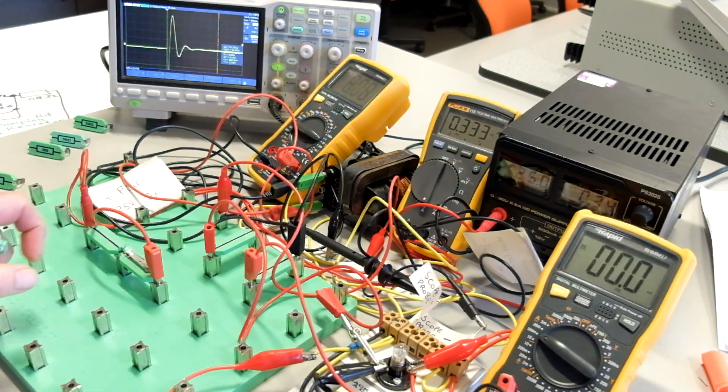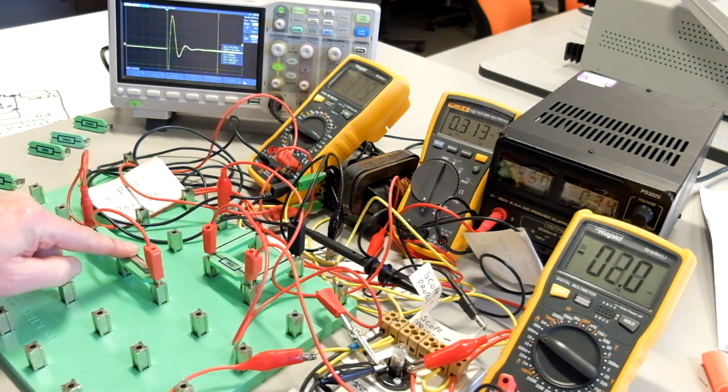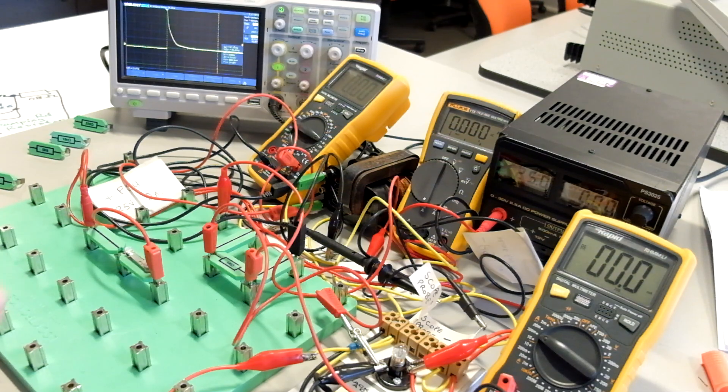So no resistor, we have oscillation. Put a resistor in, we then have critical damping. It's effectively a negative feedback loop.